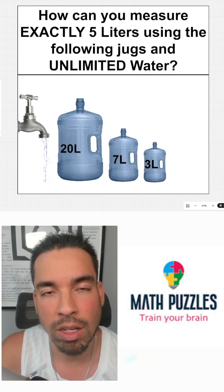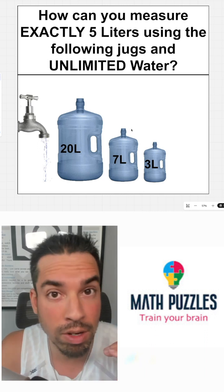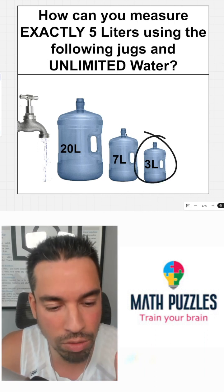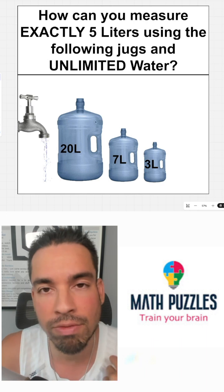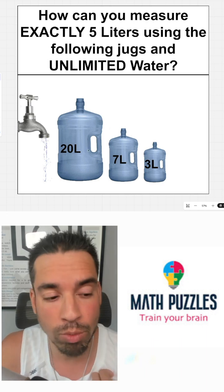So we basically can only rely on filling these up to the very brim to know that we've got exactly three, exactly seven or exactly 20. Now with that information, I'm going to show you how I would do it.